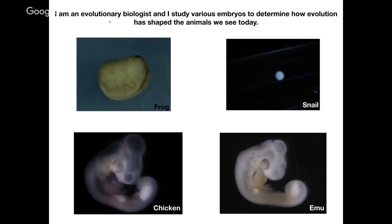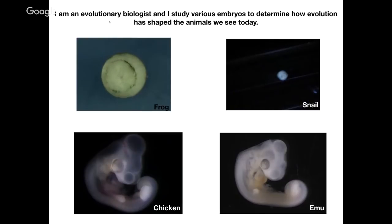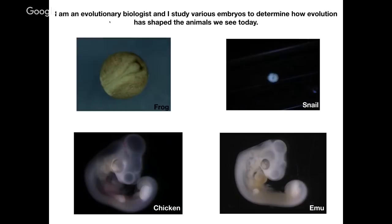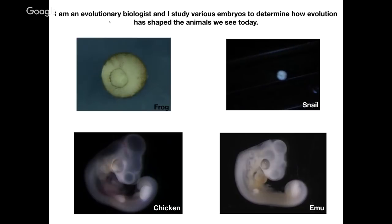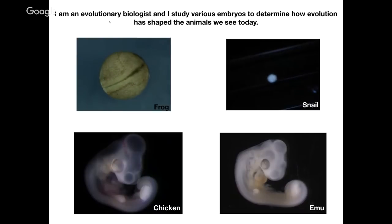I am a basic scientist. I ask questions that are just academic — we want to understand how this works. So we're going to approach this question and try to understand what are some of the genetic modifications between chickens and emus that result in either wings capable of flying — because believe it or not, chickens do fly — or emus, where they can no longer fly.